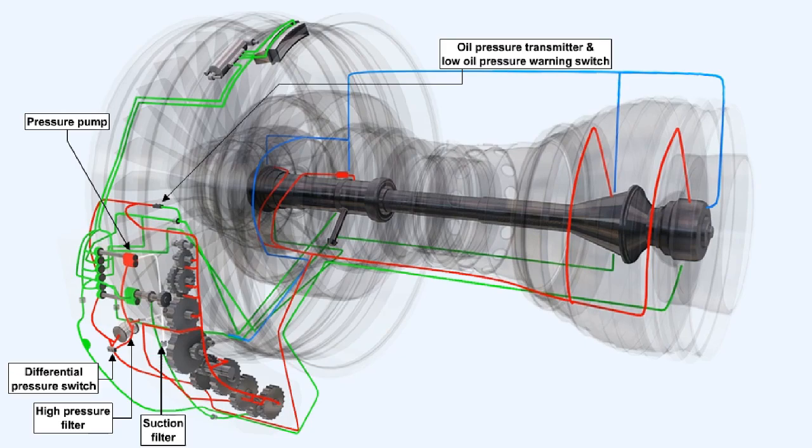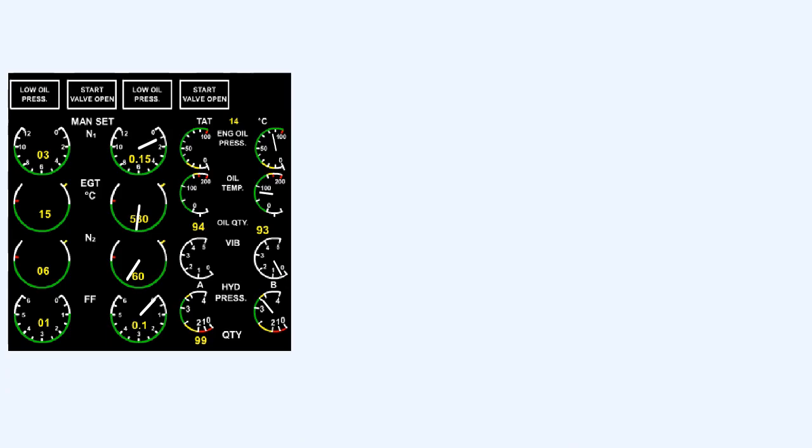The upper portion of the oil gallery transfers the oil to an oil pressure transmitter and low oil pressure warning switch. These items are used primarily to give warning in the cockpit of malfunctions in the oil system. Other parameters indicated in the cockpit are those of oil quantity and oil temperature, the latter being measured as the oil leaves the oil cooler.